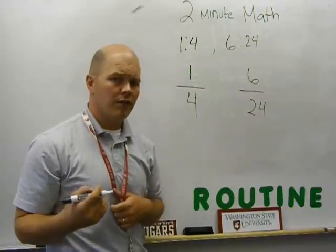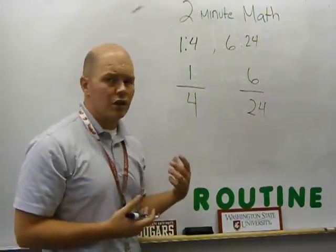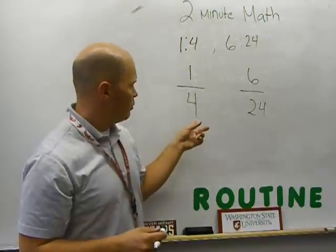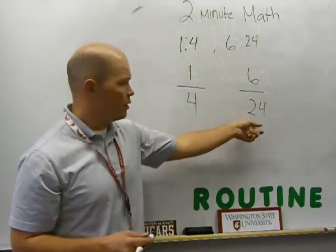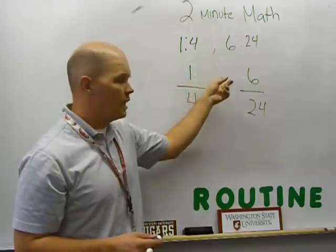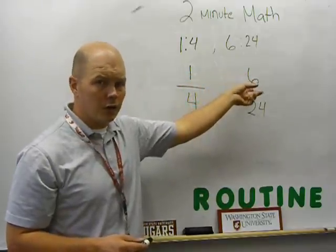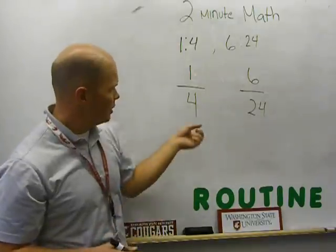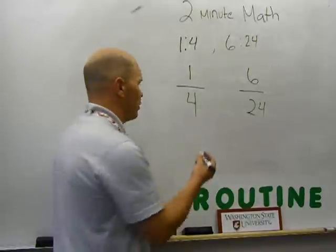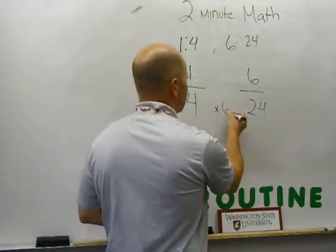Now, we said if things were going to be proportional, they'd have to share the same constant number, which would mean if I multiply the denominator by a constant number to get the other denominator, then I can multiply the numerator by that same constant number to get the numerator over here. So, in this case, let's look at my denominator first. And I would say 4 times 6 is equal to 24. So, I'm going to write times 6 here.